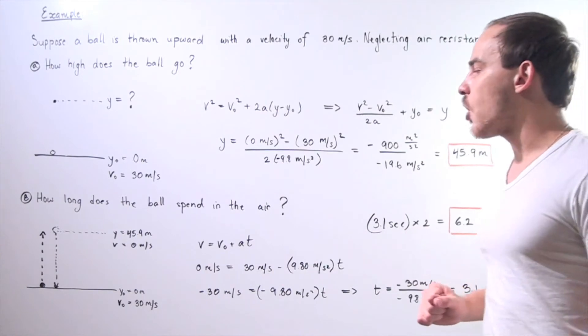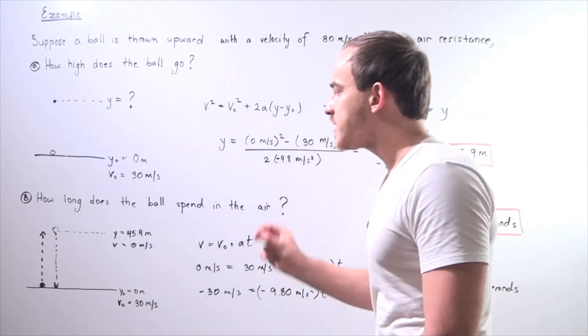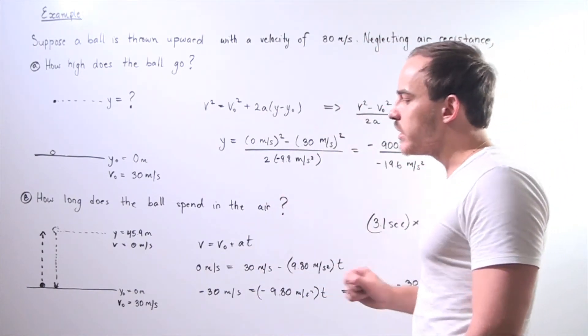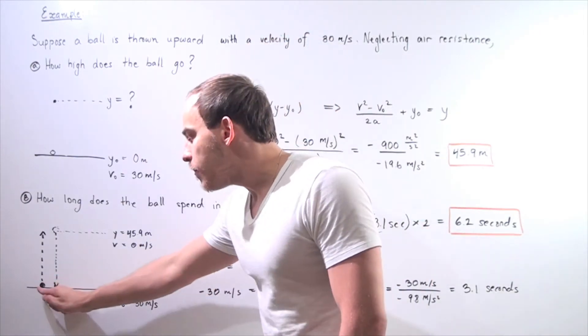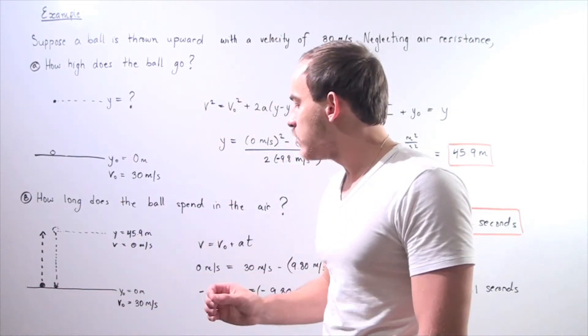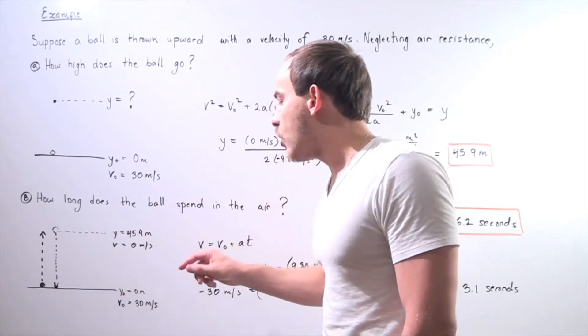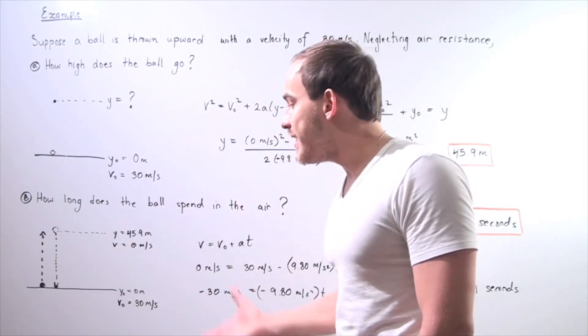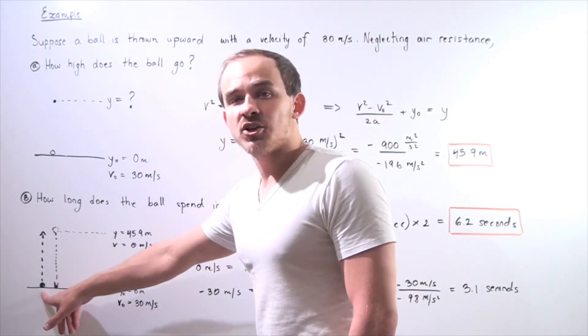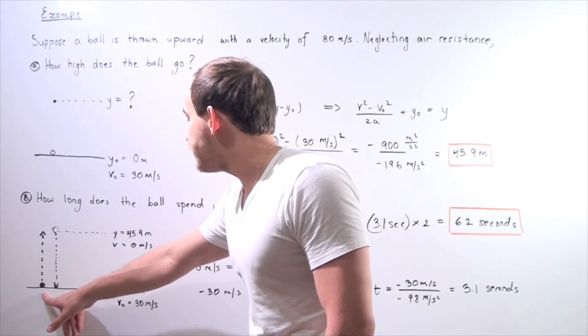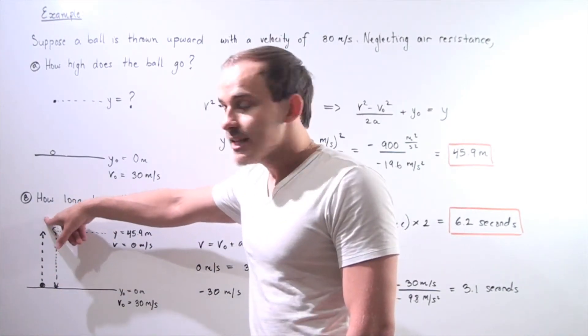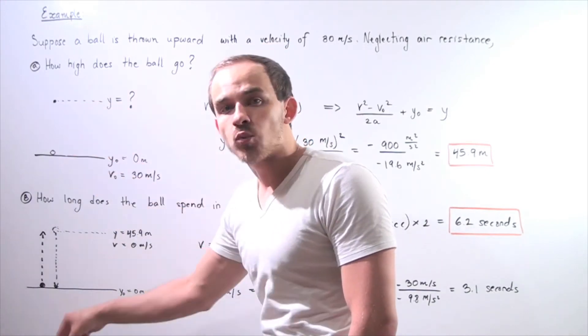Let's move on to part B. How long does the ball spend in the air? So let's draw our diagram. Once again, we have the ball. It begins at the ground. We make our y initial 0 meters. It travels 45.9 meters upward, switches directions, and begins traveling downward.